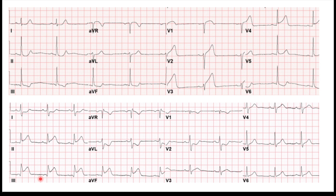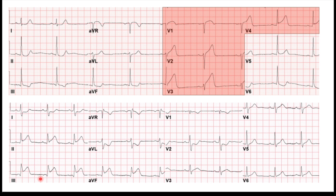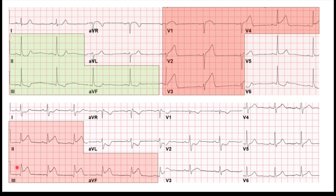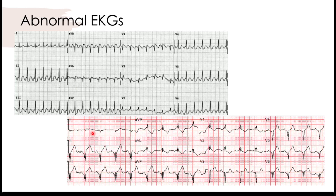On this top EKG, you've got a pretty typical anterior STEMI. We've got P waves, our rate is okay — maybe a little slow, but nothing we need to jump on immediately. Here are our anterior leads with ST elevation. V1 through V4 represent the anterior walls — this is an anterior STEMI. We have reciprocal changes, some ST depression, and a couple of flipped T waves in the inferior leads. The bottom one here is a pretty typical inferior STEMI look — inferior leads have ST elevation in 2, 3, and AVF, and our lateral leads have our reciprocal change.